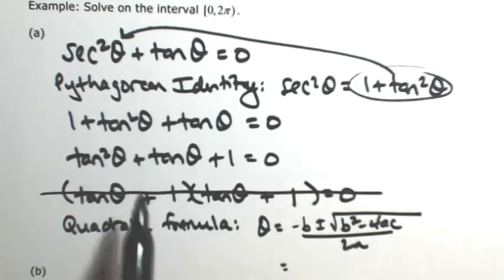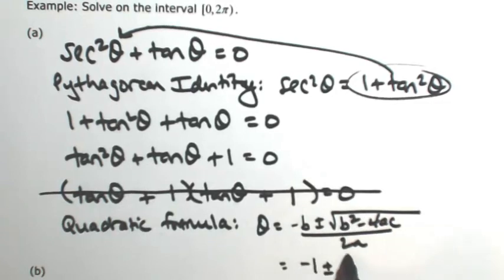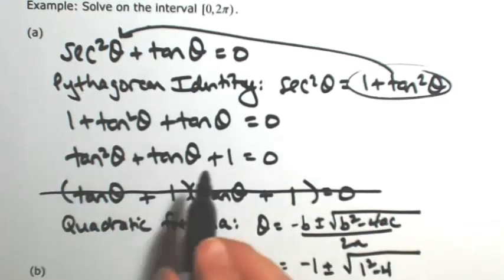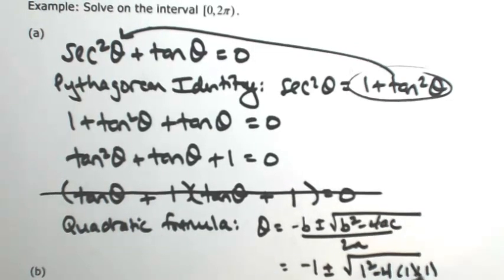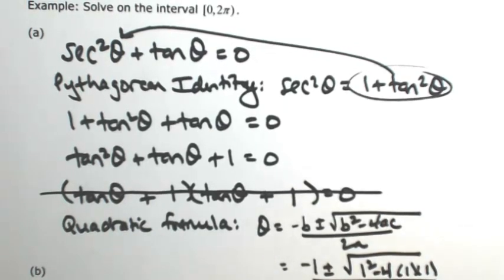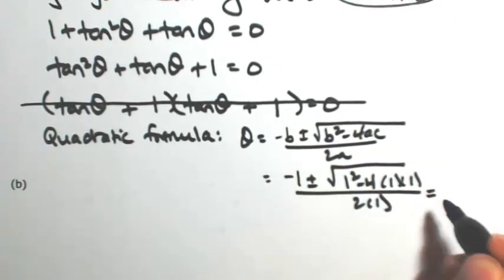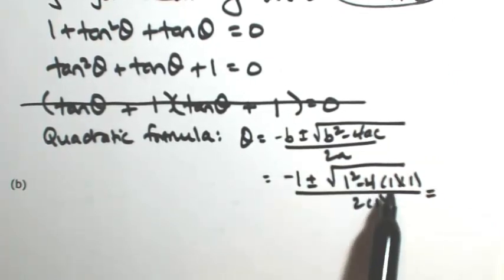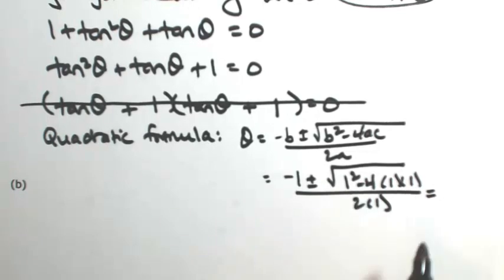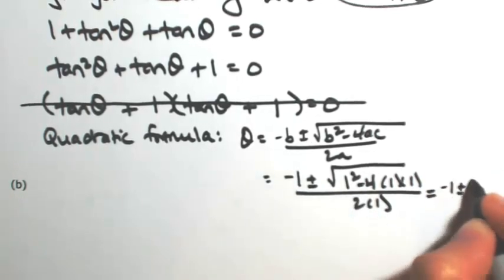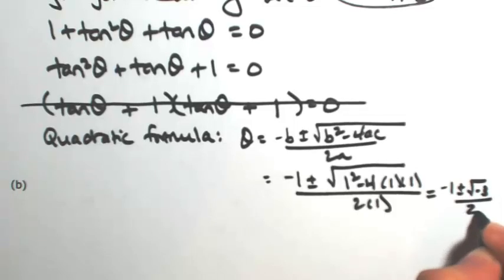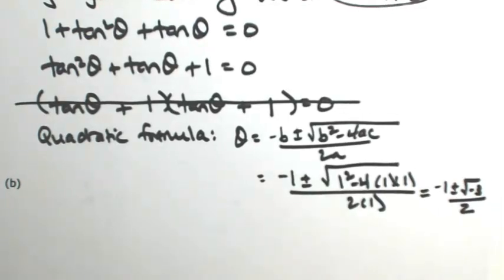Okay, so the number that's in front of tangent is a 1. So I get negative 1 plus or minus that same 1 squared minus 4·1·1 over 2 times 1. Good news. The inside of that radical is negative. So we end up with 1 minus 4, which is negative 3, which is going to give you imaginary solutions.